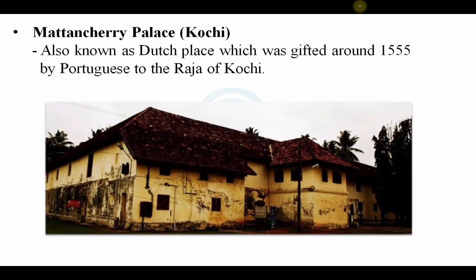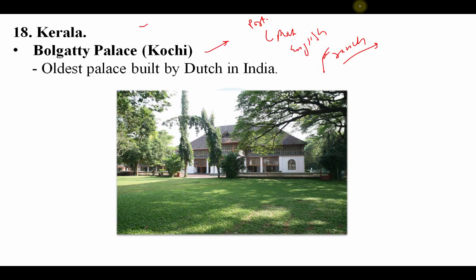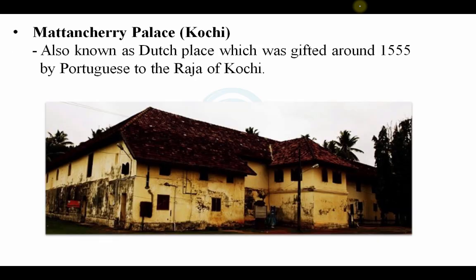Another important palace is Mattancherry Palace, also in Kochi. It is also known as the Dutch Palace, though it was gifted around 1555 by the Portuguese to the Raja of Kochi. Both Bolgatty Palace and Mattancherry Palace are in Kochi, Kerala, and both are associated with the Dutch.